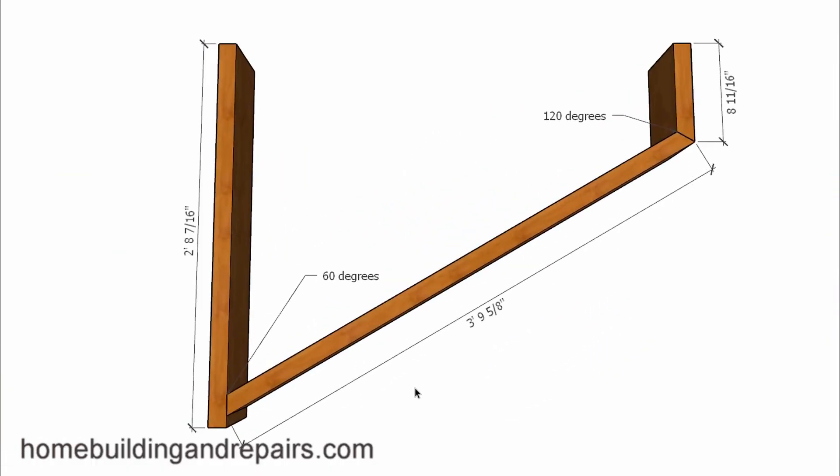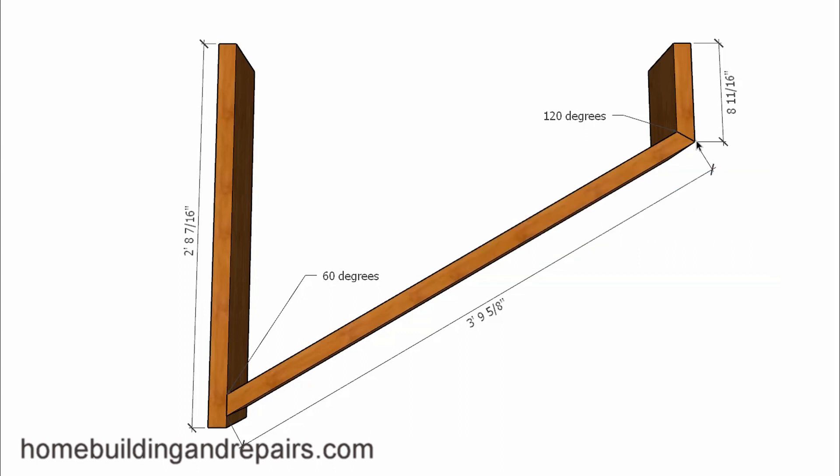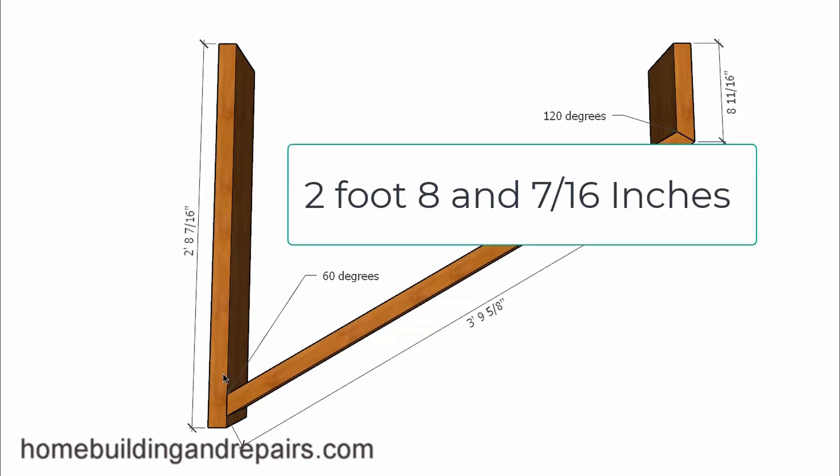And for the upper step, we will have a 30 degree angle here and 30 degree angles over here, along with a 8 and 11 sixteenths inch board here from this point to this point. And then from long point to long point here, we're going to have 3 foot 9 and 5 eighths of an inch. And then of course this board could be a little bit longer. However, the point where this will die into here is going to be 2 foot 5 and 3 quarter inches.